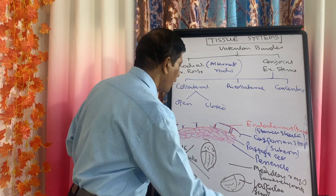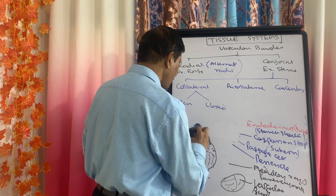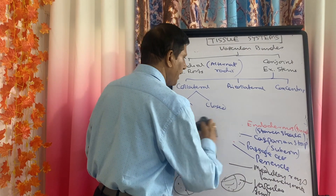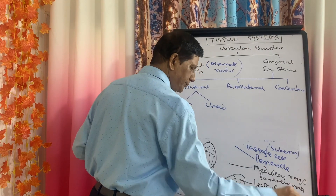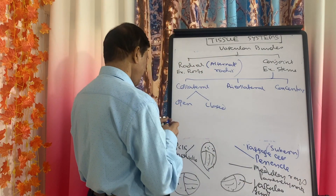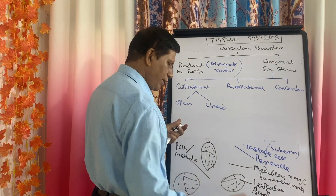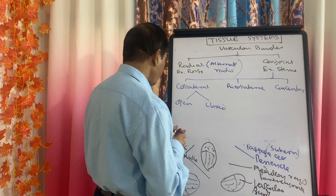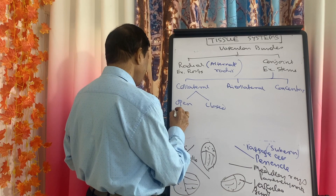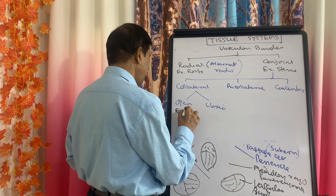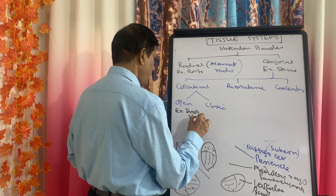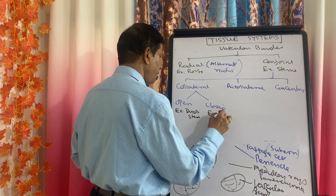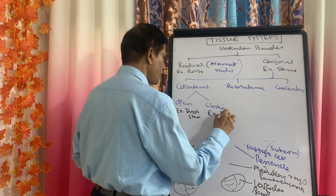Whether it is open or closed depends upon the presence of cambium. The example of the open type is a dicot stem, and the example of the closed type is a monocot stem.